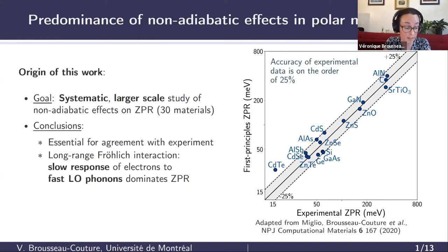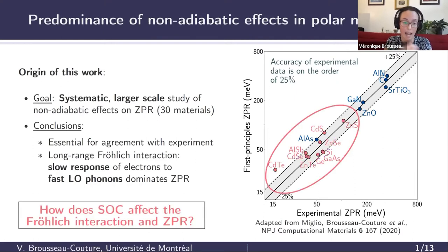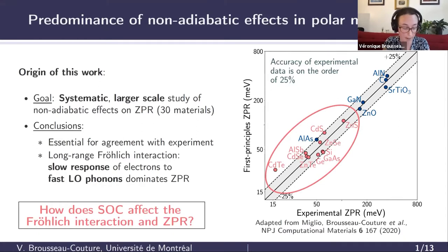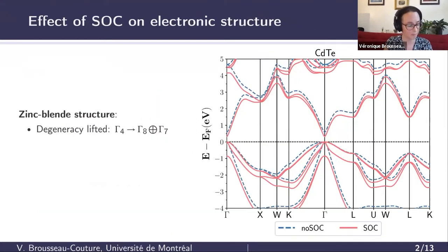For consistency at the time, spin-orbit interaction was neglected throughout this work, even for the heaviest materials in the set. So the question I will address today is: how will spin-orbit coupling affect both the first-principles ZPR and the Fröhlich interaction?